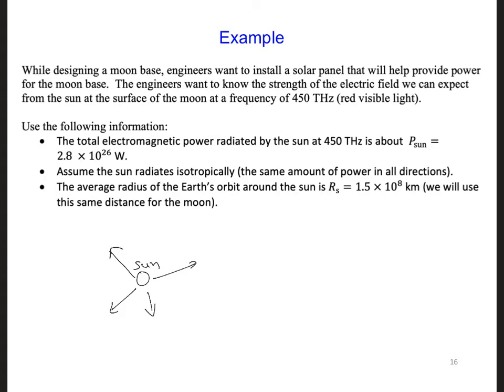By the time the sunlight reaches the moon's surface, so here let's say this is the moon, the power has spread out over a sphere with a radius roughly equal to the radius of the Earth's orbit. So this distance here was given as 1.5 times 10 to the 8th kilometers. So this power is going to be spread out over a sphere of that radius.